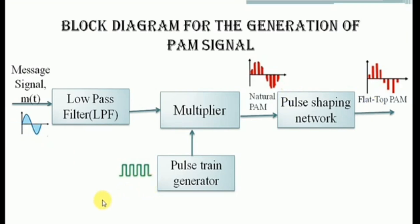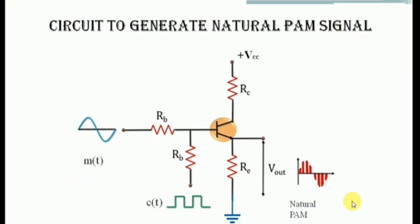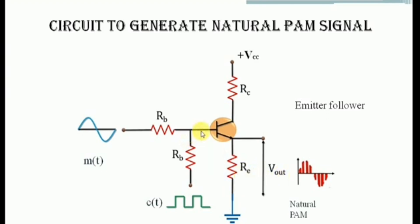Now let us see the circuit involved in generating a natural PAM signal. In this circuit, the message signal is applied at the base terminal and the response is taken from the emitter terminal — this is a common collector configuration, also called an emitter follower. The emitter follower always provides an output signal that is a replica of the input signal.